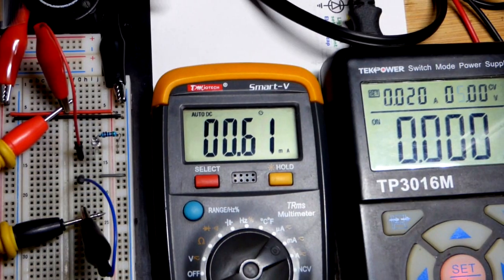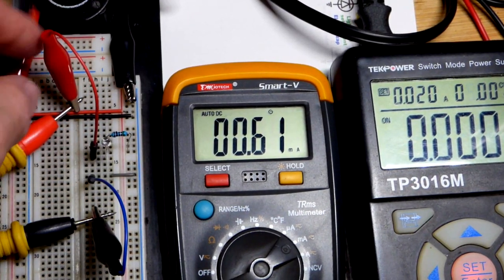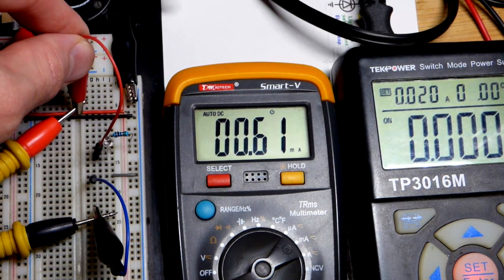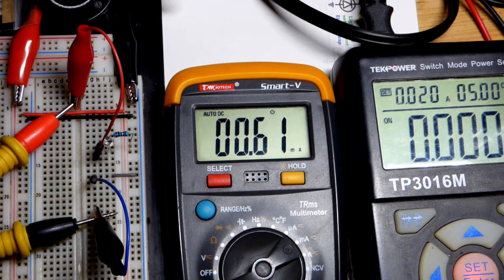So we have the multimeter here and I just made these breadboard jumpers. I just clamped the alligator clip right there, I just use pliers, and so I can clip it to the probe there so we have a steady connection.